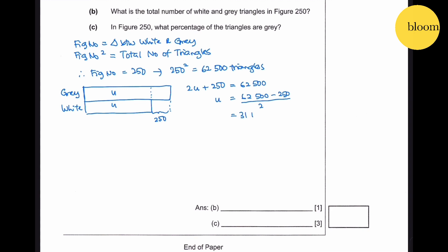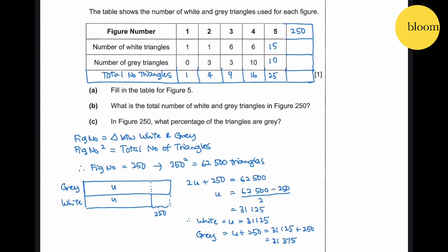Therefore white equals u equals 31,125. Gray equals u plus 250 equals 31,125 plus 250 which gives us 31,375. So white triangles is 31,125, gray triangles is 31,375, total is 62,500.